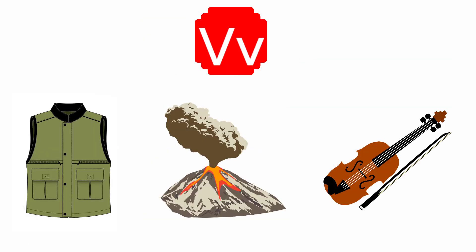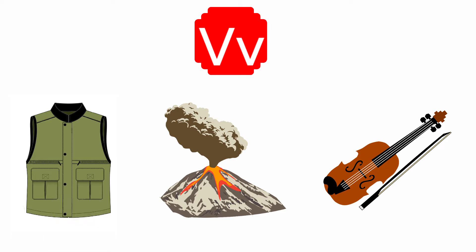Look at the first one, it is a Vest. The beginning sound of the picture Vest is V, and the sound of the letter V is V. The sound of the letter V and the beginning sound of the picture Vest are the same. So, we are going to circle the picture Vest.